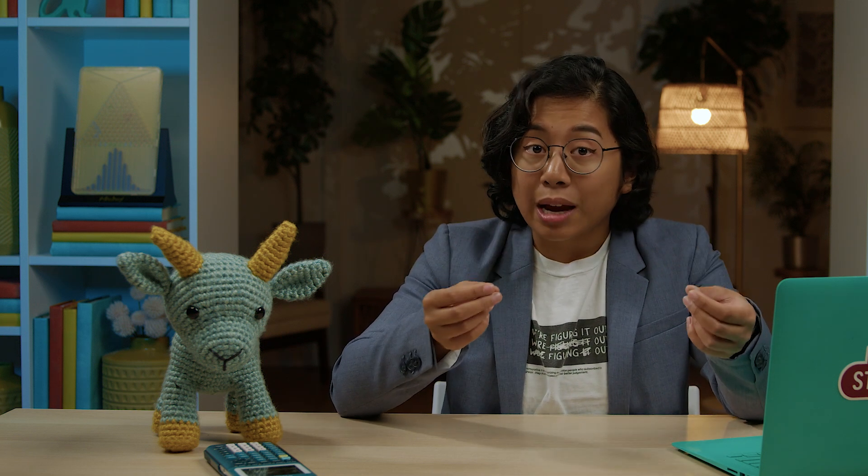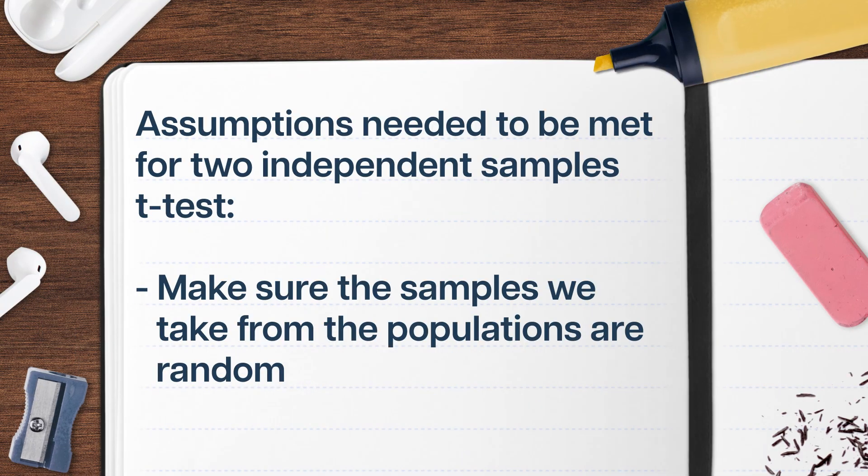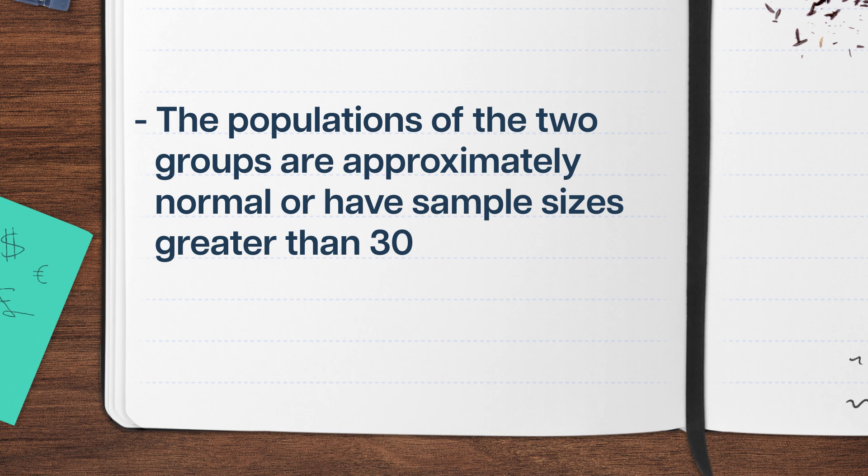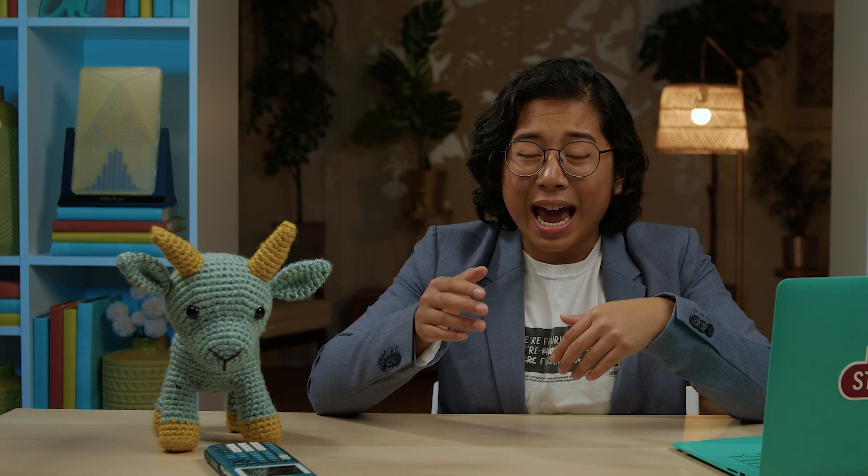Before we launch into calculating anything, we need to make sure our assumptions are met for the two independent samples t-test. We assume characteristics about the data going into our test, and if those assumptions aren't met, we trust our results less. First, the sample we take from the population must be random so that we represent the broader population. Next, we need the populations of the two groups to be drawn from approximately normal distributions. Since we have more than 30 data points per group, the central limit theorem applies, giving us the normal sampling distribution. If we think the two populations have equal variation, there are other ways to simplify calculations, like using a pooled t-test, but we don't know enough about this situation to go there.